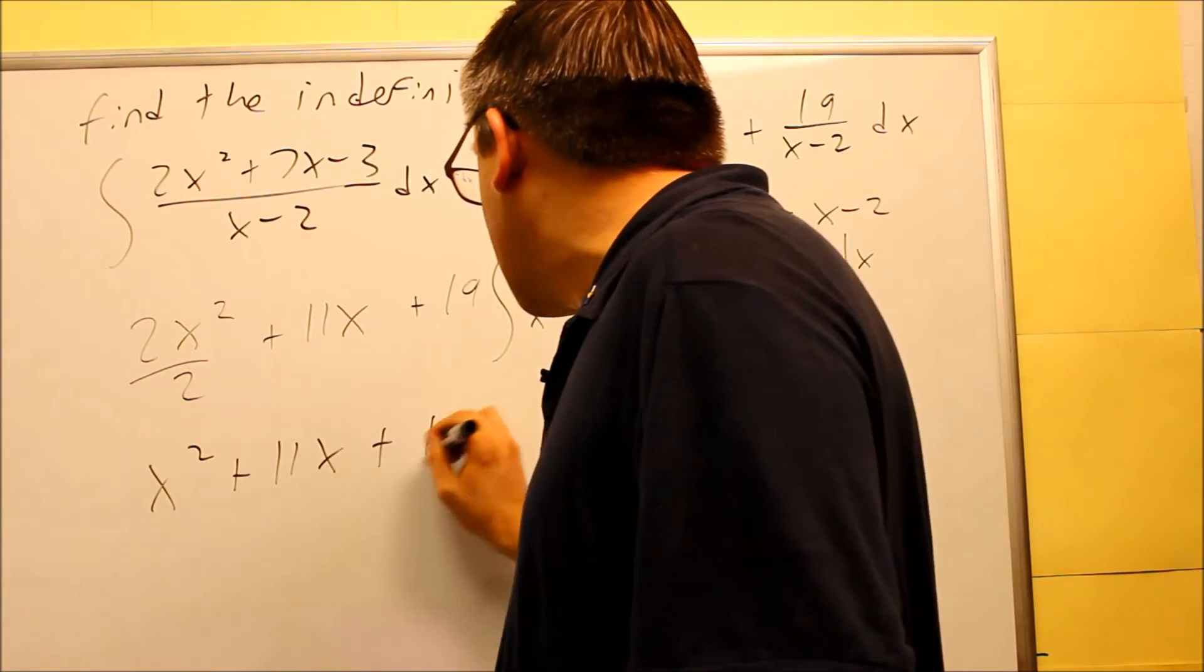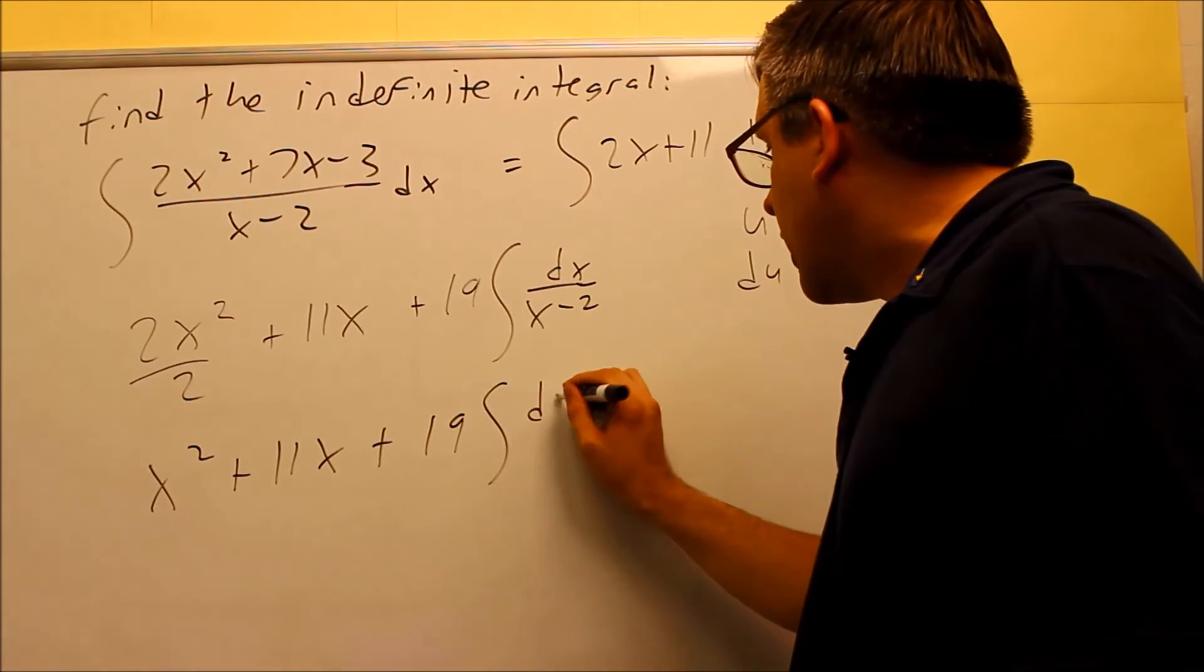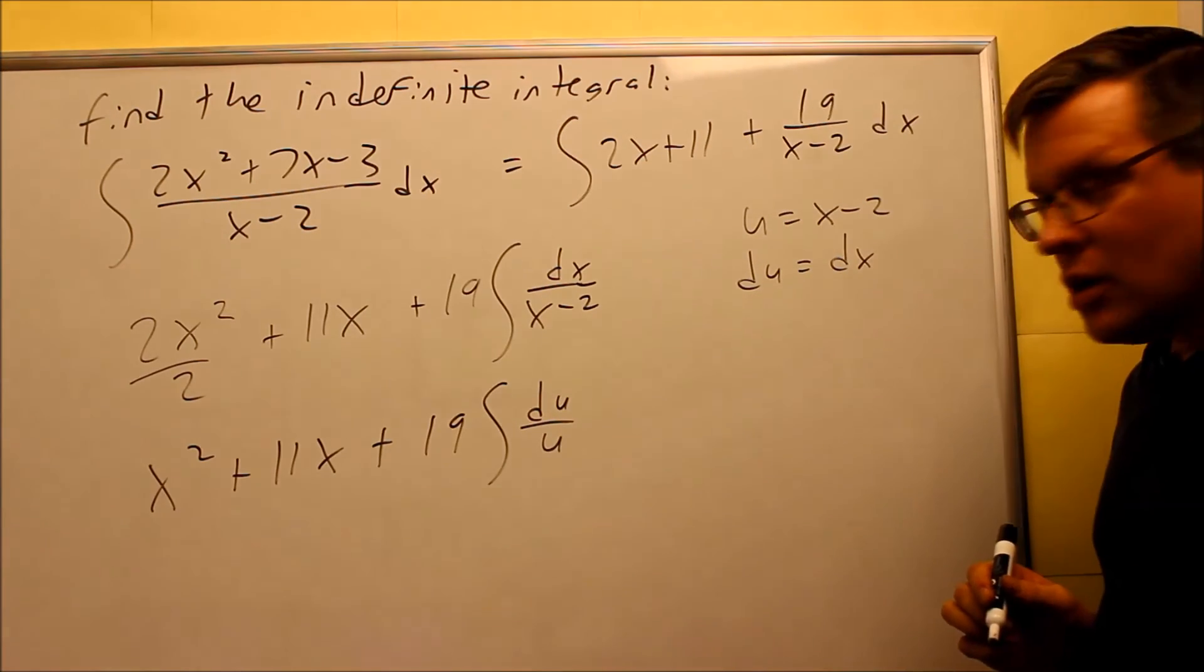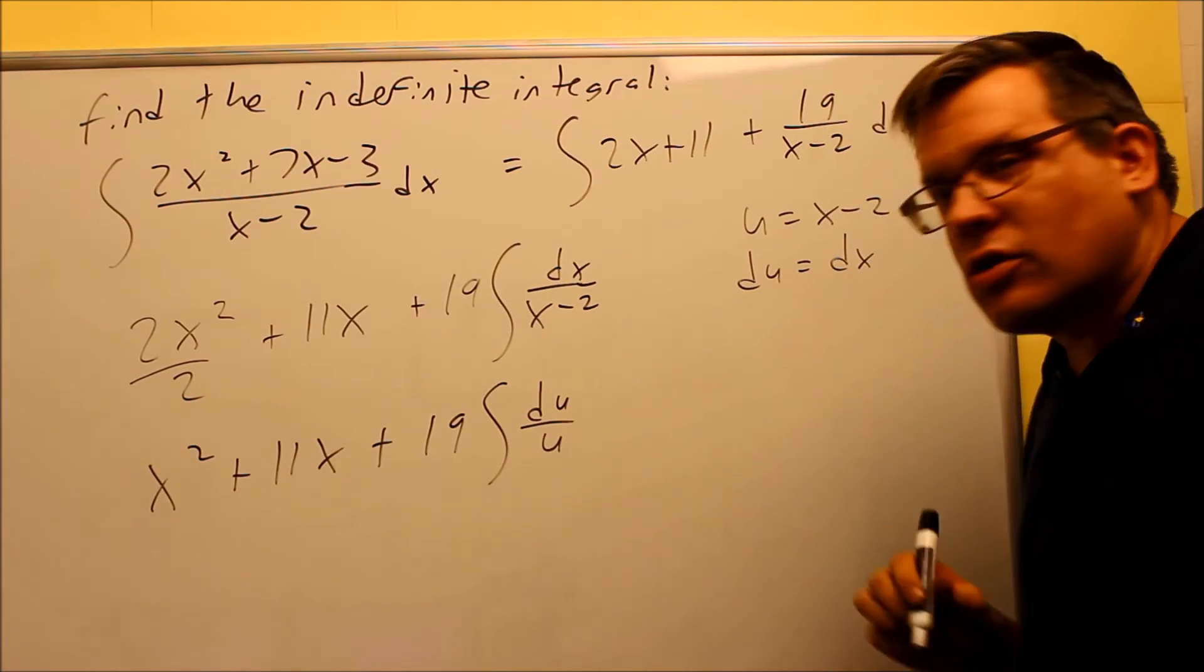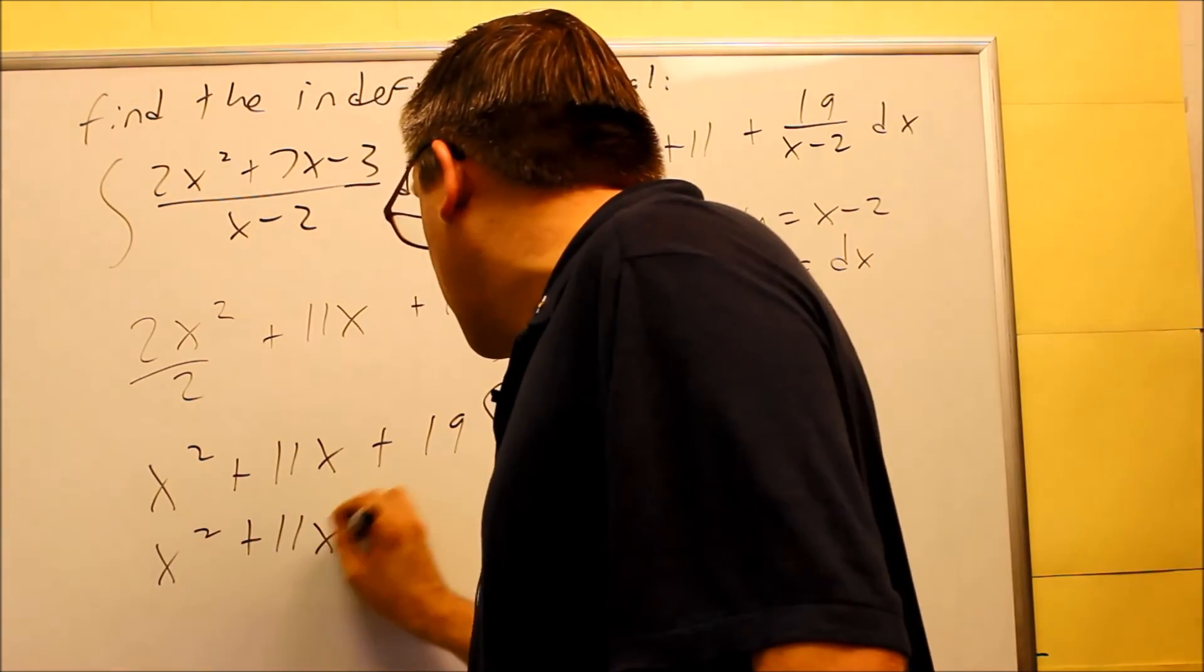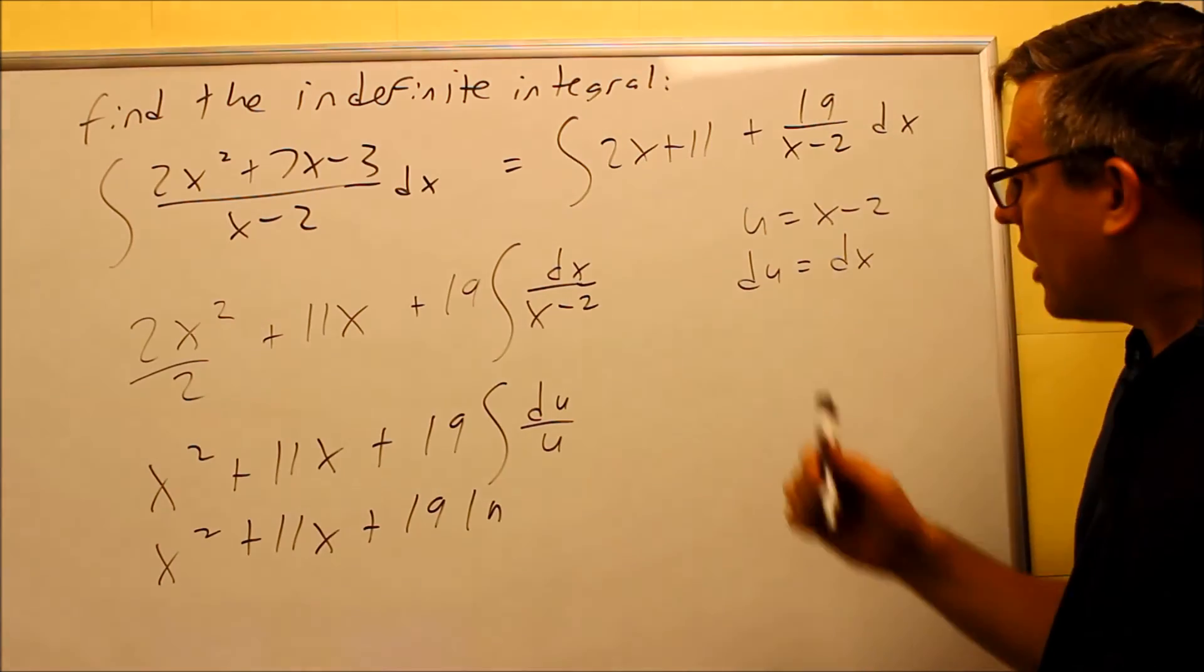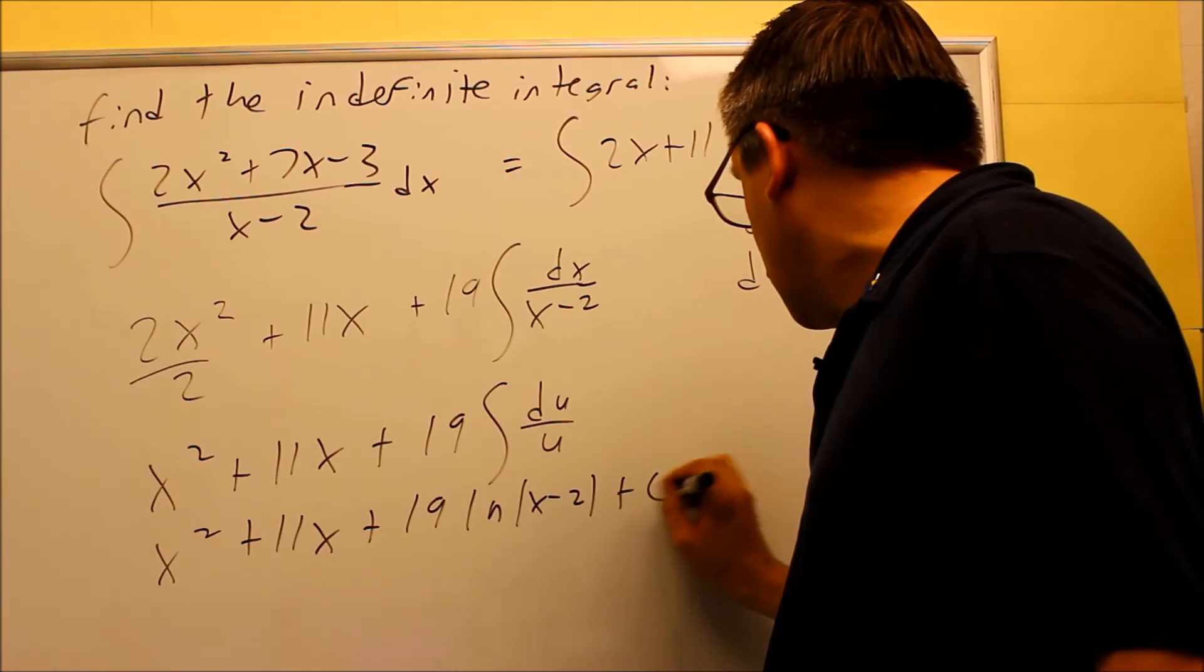I can simplify this, x squared plus 11x plus 19, and then when I put that in, I'll just replace the dx with du, and x minus 2, I can put a u in there. So this is essentially 1 over u du, which we know that's going to turn into a natural log. So now, finally down here, we can integrate it. We get natural log, now it would be natural log of u, but I'll just go ahead and put the u back in directly. I'll put x minus 2 here, and then plus c.